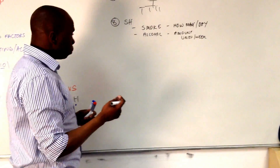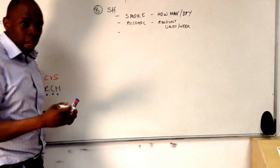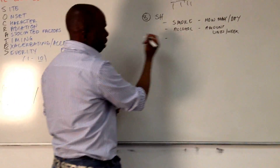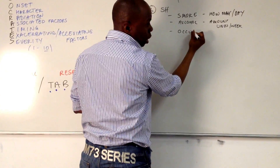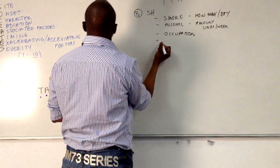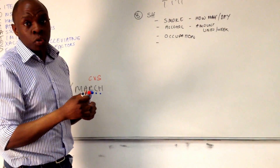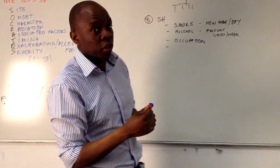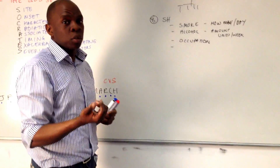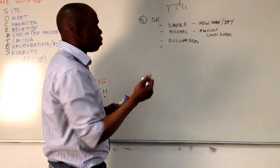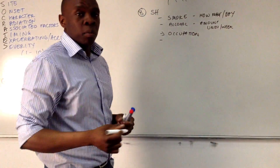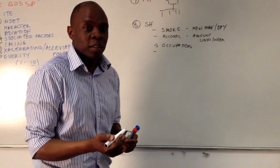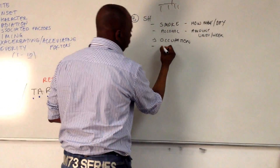Under social history you can also inquire about their occupation if you haven't already done so. You also need to be careful about asking whether they use any sort of recreational drugs — these are substances people use for their own purposes, your cannabis and all the rest of that. So, any sort of recreational drug use.